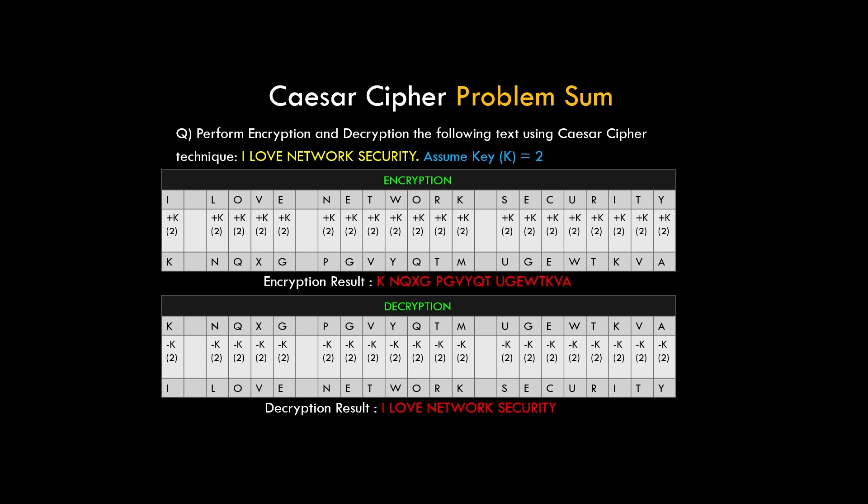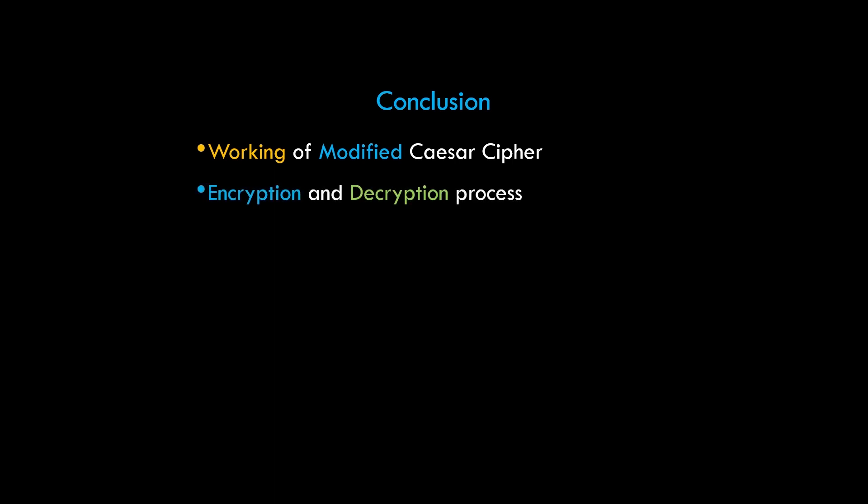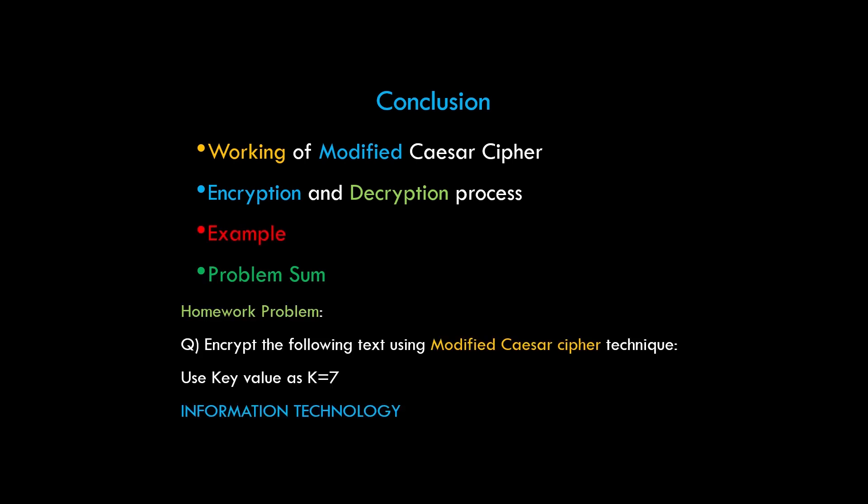So this is the process of decryption. To conclude: we understood the working, encryption, and decryption process of modified Caesar cipher technique, we saw an example with Alice, Bob, and Tom, and we solved one problem. Here is a homework problem for you to solve for practice — put your answer in the comment section below. In the next video we'll look into another cipher technique and understand its working. If you like this video, give it a thumbs up, share it with your friends, drop your reviews and suggestions in the comments, and subscribe to our channel so you get notified about the next video.